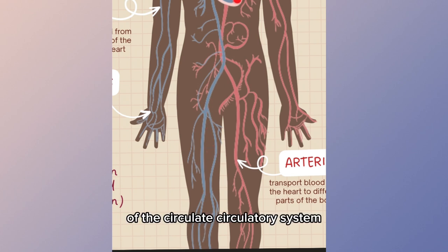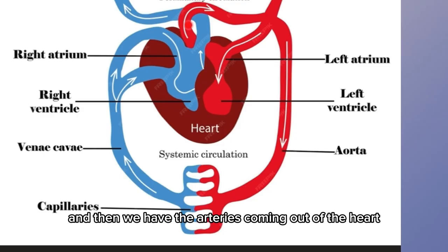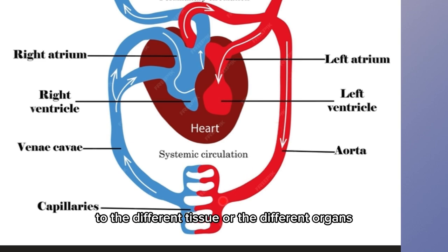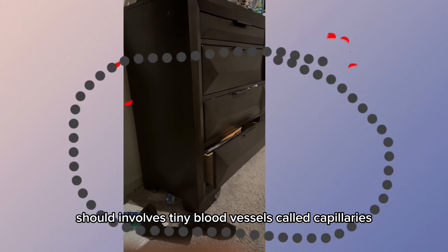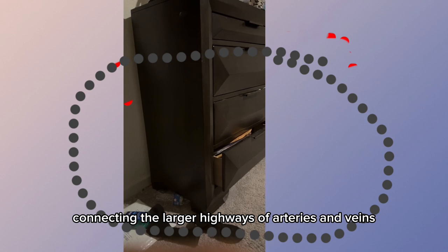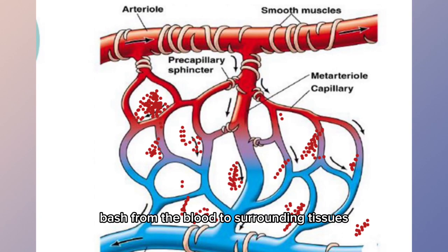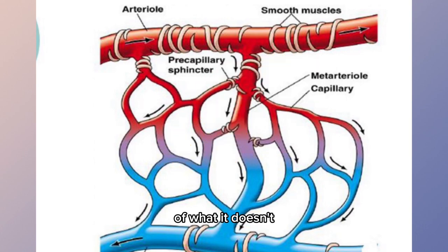Let's take a focused look at the anatomy and physiology of the circulatory system. We have the heart and the arteries coming out of it to distribute blood to different tissues and organs. At a certain junction, you have tiny blood vessels called capillaries — think of these as narrow roads connecting the larger highways of arteries and veins. In these capillaries, oxygen and nutrients pass from the blood to surrounding tissues, while waste products move from tissues to the blood.